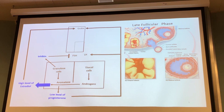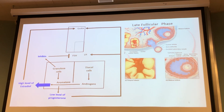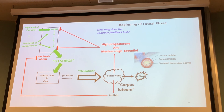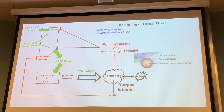Going to the next slide: high estradiol and low progesterone gives one order for GnRH, a second order for GnRH — two orders going down to the pituitary — plus one order directly on the anterior pituitary, giving a massive amount of LH and just a little bit of FSH. The follicle cells and ovum box on the slide represents the whole structure — granulosa cells, theca cells, plus the ovum inside — that's the mature follicle, and it receives the LH surge.